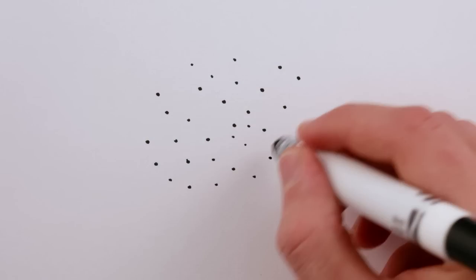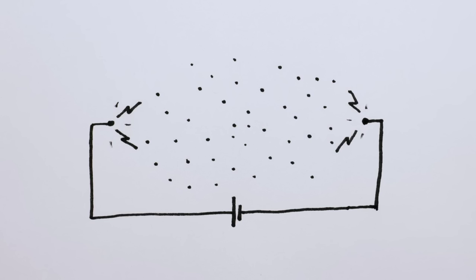To make a laser, all you need to do is give a big collection of atoms enough energy so they're excited and ready to emit light.